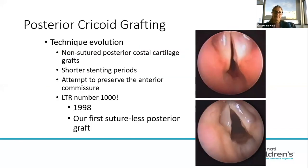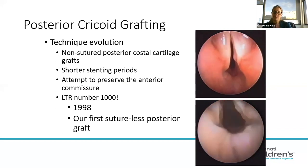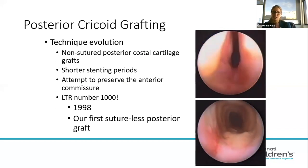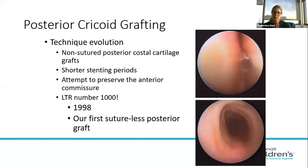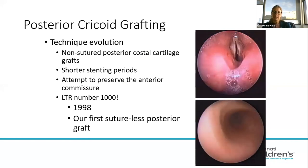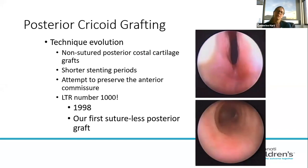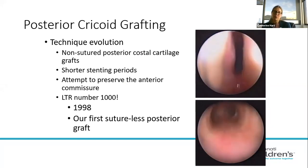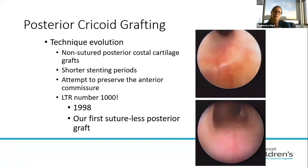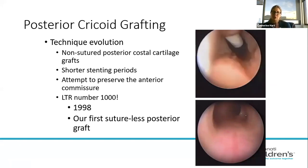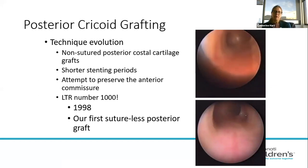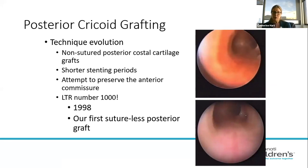Posterior cricoid grafting has really evolved over time. We used to always suture these grafts into place, which is fiddly and difficult. Back in 1998, the first non-sutured posterior graft was done here — which happened to coincide with Dr. Cotton's institution's thousandth laryngotracheal reconstruction. We also used to stent these kids for a very long time and found you can get away with a shorter period, and we always used to do a complete laryngofissure, which we now try to avoid.